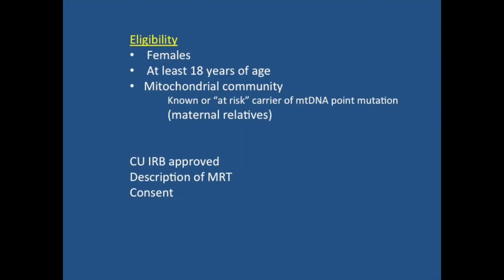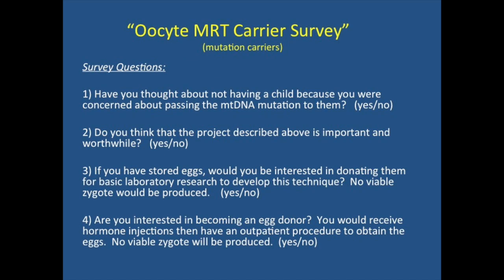We also had a survey for healthy donors donating in the IVF clinic, and we wanted to know their willingness to donate eggs for MRT research. Eligibility was females at least 18 years of age. In the mitochondrial community, it was any known carrier or their maternal relatives, again females at least 18. Everyone was provided a description of what MRT is. Our oocyte carrier survey questions included: have you thought about not having a child because of concern about passing the mutation? Do you think the project is worthwhile? If you have stored eggs, would you be interested in donating them for basic laboratory research to develop the technique — no viable zygote would be produced? And are you interested in becoming an egg donor, receiving hormone injections then an outpatient procedure to obtain eggs, with no viable zygote produced?